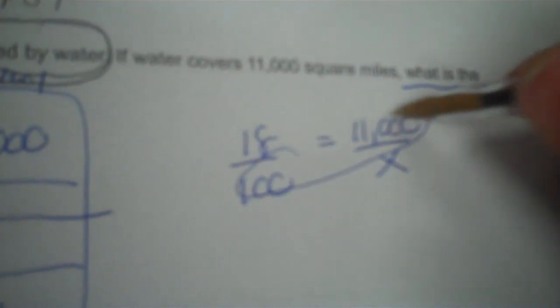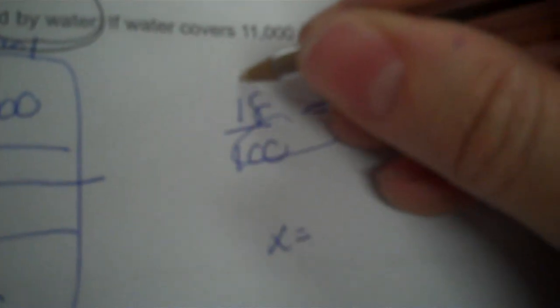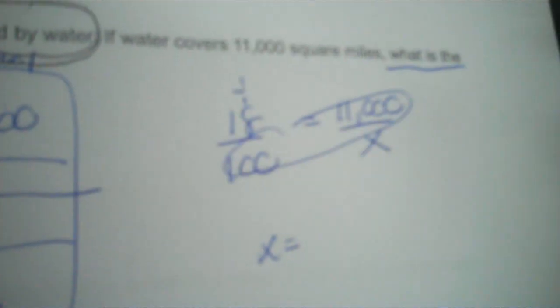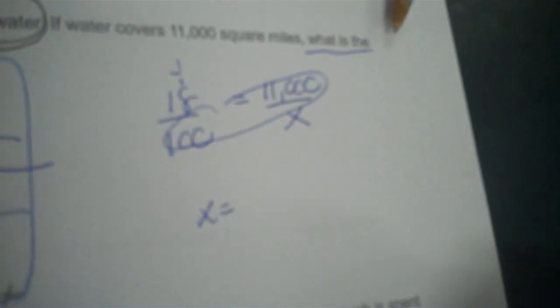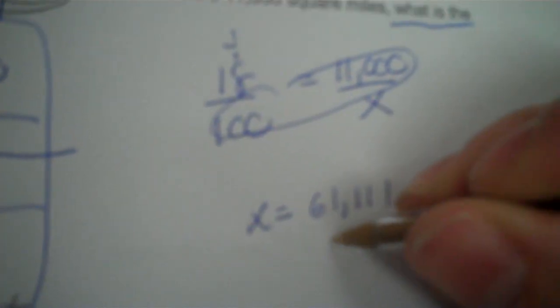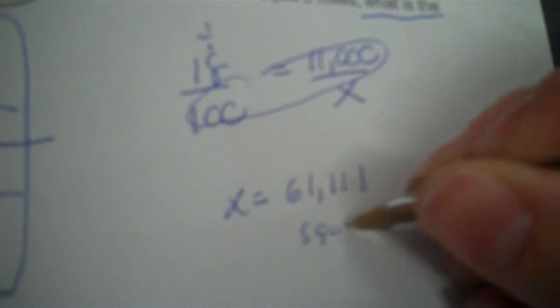So you cross-multiply and divide. We take 100 times 11,000 divided by 18. You're not talking about money, so just put 61,111 square miles.